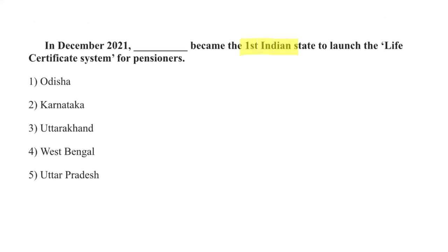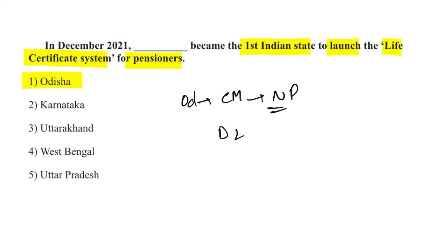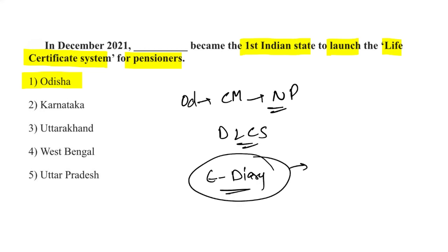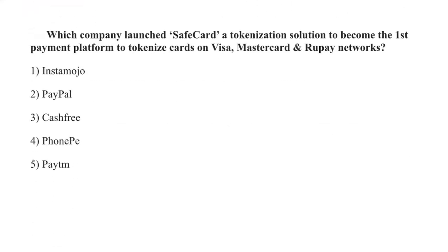Odisha became the first Indian state to launch the life certificate system for pensioners. During this initiative, the Chief Minister of Odisha also launched e-Diary, a portal where citizens of Odisha or any Indian citizen can access and view the work diary of the government directly from their mobile phones.